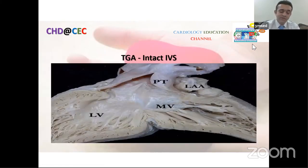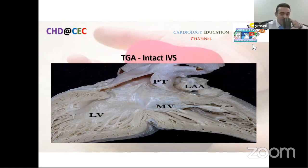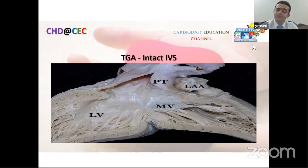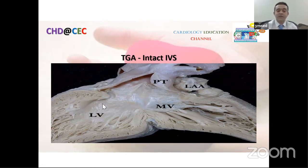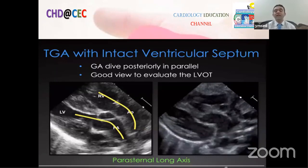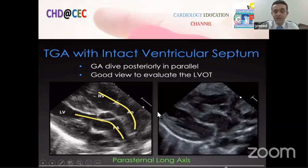The first and most common type of TGA — approximately fifty percent of cases — is simple TGA with intact interventricular septum. These are the most dangerous and life-threatening. An anatomical specimen demonstrates the pulmonary trunk with branching pattern arising from the left ventricle, with no interventricular defect. The parasternal view is very important to see the great vessels arising from the left ventricle diving posteriorly in parallel relations, and to evaluate the outflow tract structure.